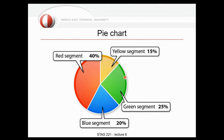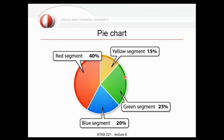For example, a pie chart is perfect for showing the frequency or relative frequency for nominal data types. You calculate the angle for each category out of 360 degrees. But when you use software, you don't even need to know about those angles.